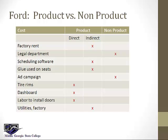The legal department is needed, but it's not part of making the thing. Scheduling software is part of managing direct labor, so that would be indirect. The glue on the seats would be very small materials, too difficult to count, so it would be indirect material. The ad campaign — you must advertise to customers to get them to buy your stuff, but that's not part of the cost of making it. The tire rims and dashboards are both major ingredients for a car, so those would be direct material. The labor to install the doors is actually putting fingerprints on the product, so that is direct labor. And the utilities of the factory are indirect, or manufacturing overhead.